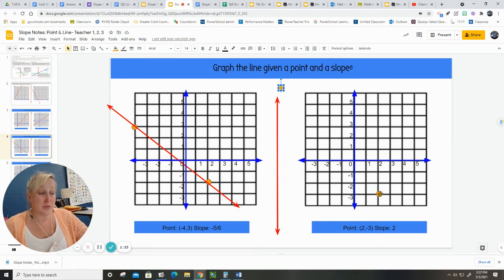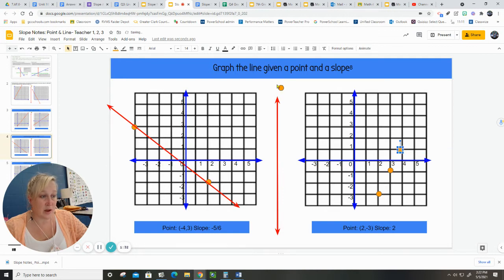So my slope is rise 2, slide 1. I can put another one. There's room. Rise 2, run 1. I can do an additional one. Rise 2, slide 1.